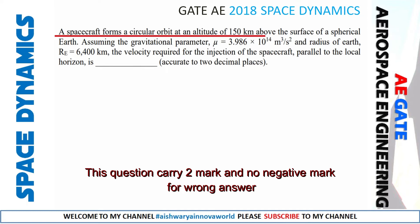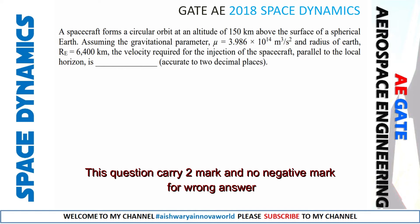Next question: A spacecraft forms a circular orbit at an altitude of 150 km above the surface of a spherical Earth. Given: gravitational parameter mu = 3.986 × 10^14 m³/s², and radius of Earth r_e = 6400 km. Find the velocity required for injection of the spacecraft parallel to the local horizon, accurate to two decimal places. Note that the question does not specify units.